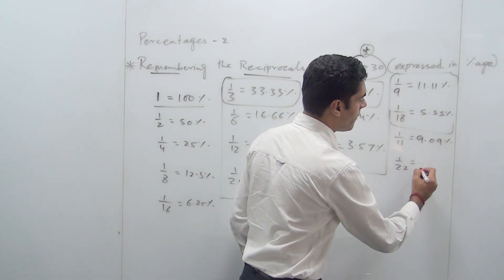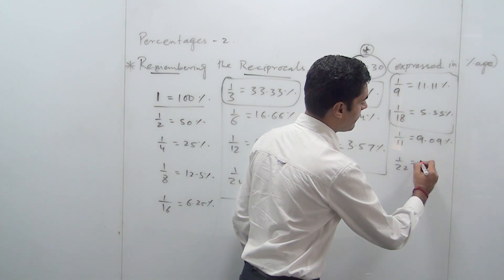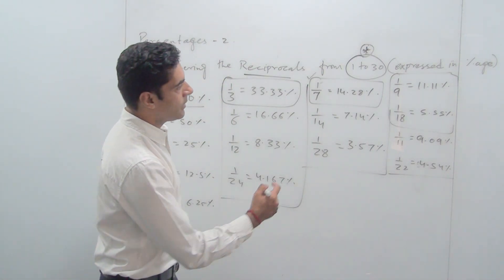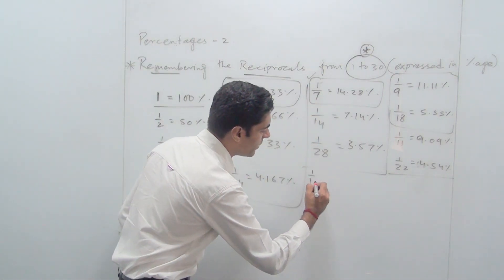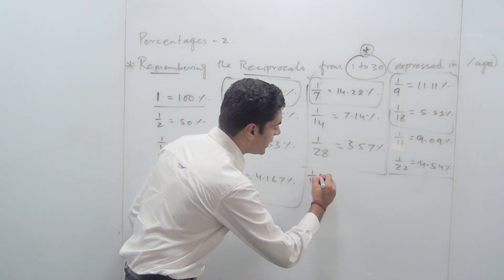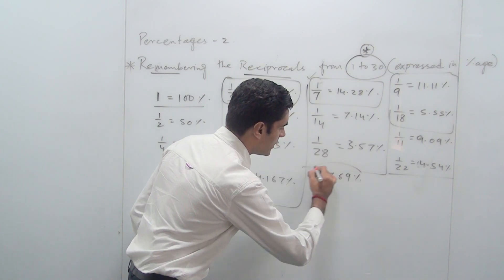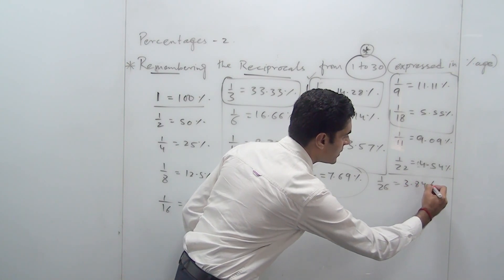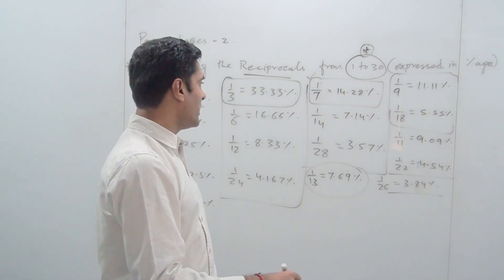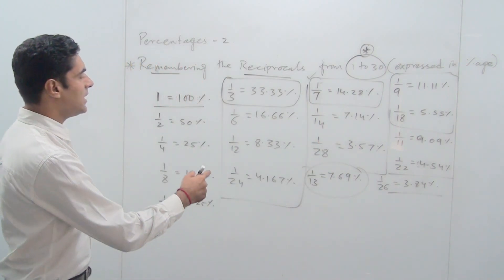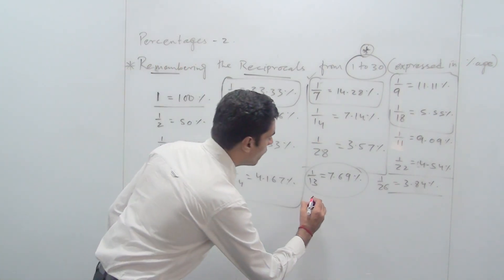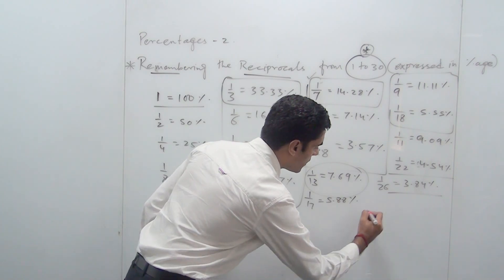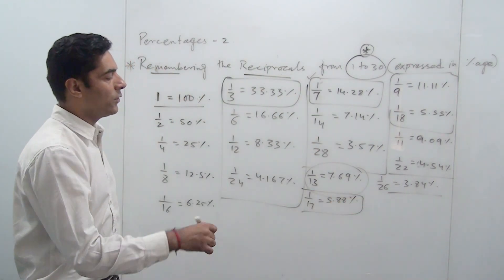Moving to the next prime number, which is 13: 1/12 we have already done as 8.33%. The next is 1/13, which is 7.69%. So 1/26 will be half of 7.69 which is 3.84%. 1/14 we have already done with the 1/7 family, that is 7.14%. 1/16 is 6.25%. And 1/17, being a prime number you will have to remember, is 5.88%. We do not need to go to 1/34.